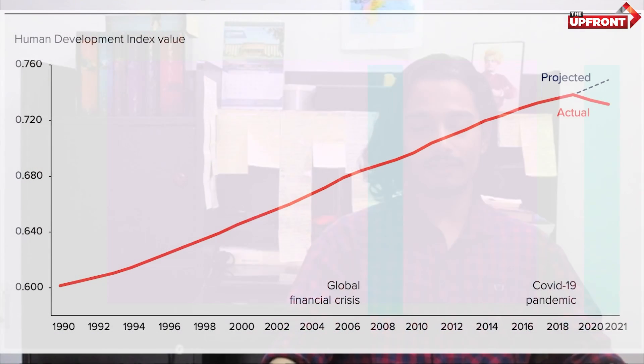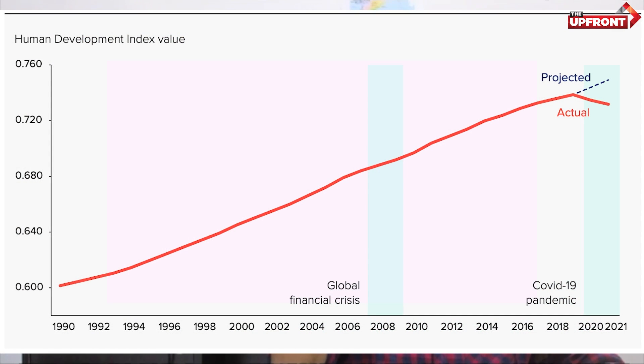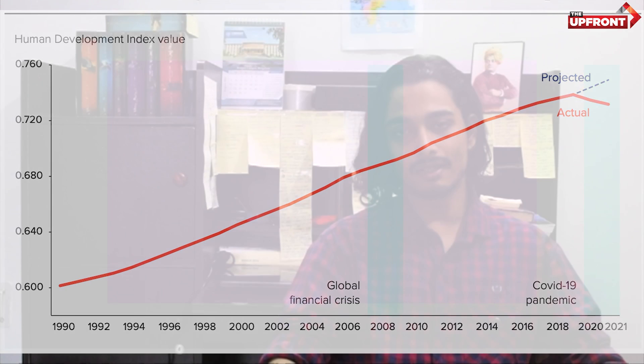The UNDP, that is the United Nations Development Programme, recently published its annual HDI index — that is Human Development Index — for the year 2021-2022. The results were not very good, and to be honest, that is to be expected. If you see the graph on your screen, the global HDI score has fallen consecutively for the last two years — 2020 and 2021 — and this is the first time in the last 32 years that the worldwide HDI score has fallen consecutively for two years, even though it was projected to go up.